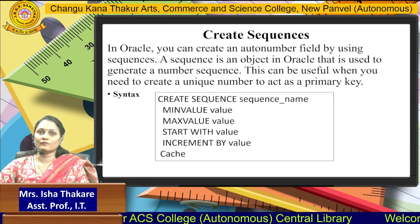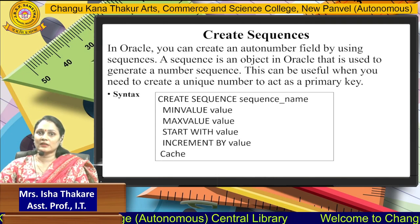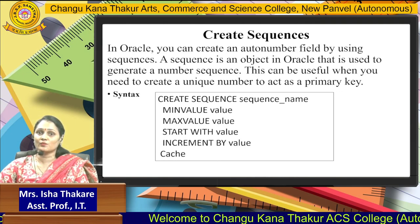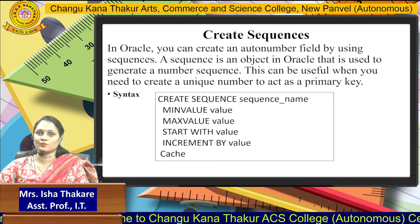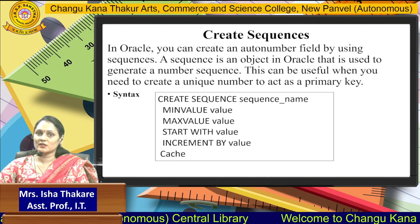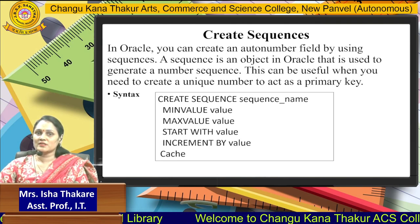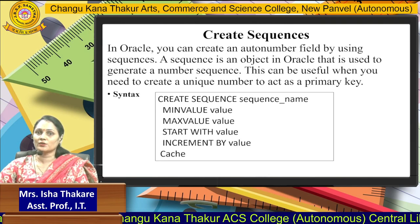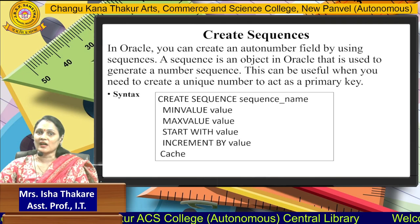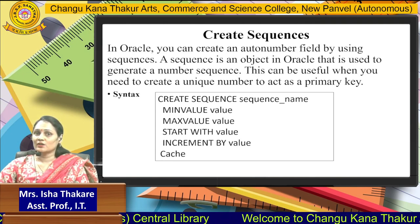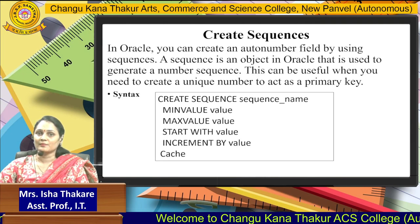The syntax for creating a sequence is: CREATE SEQUENCE sequence_name, with the following optional parameters — MINVALUE, MAXVALUE, START WITH value, INCREMENT BY value, and CACHE value. MINVALUE sets the minimum, MAXVALUE sets the maximum range, START WITH sets the starting value, INCREMENT BY sets the increment step, and CACHE has a default size of 20.